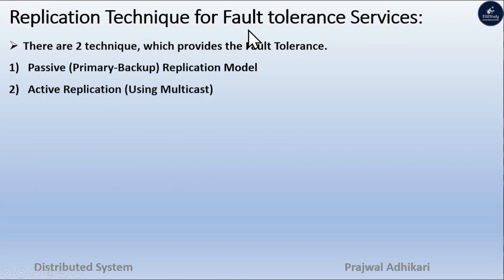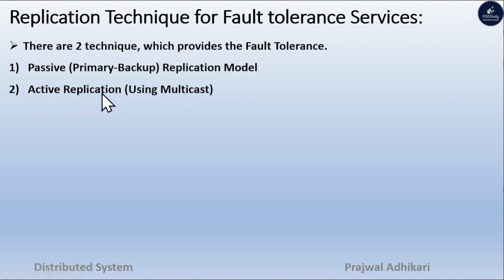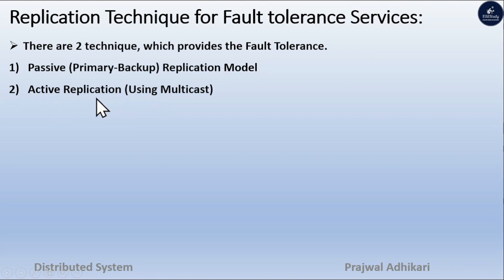There are two techniques which provide fault-tolerance services. One is the passive replication model and the second is the active replication model. The passive model is implemented using primary backup, and active replication is done using multicast. We will discuss these two one by one.